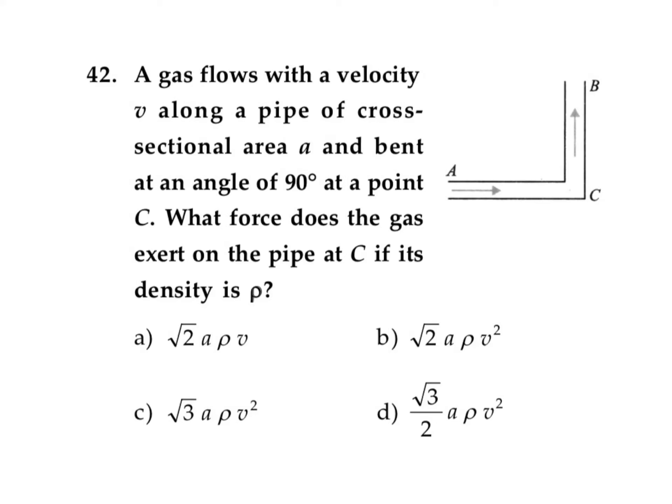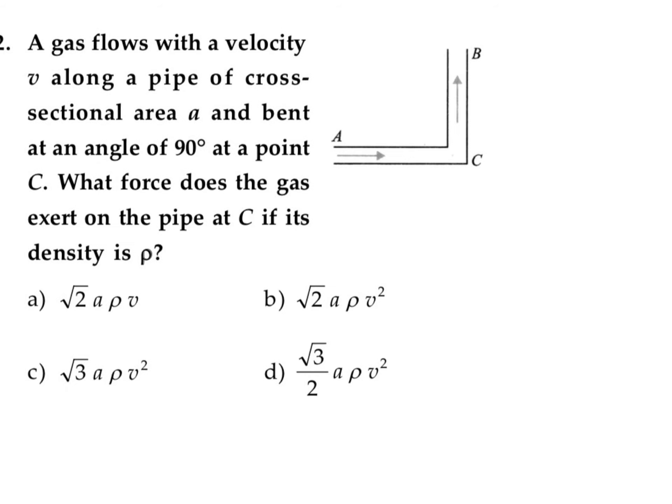In this question, it is given that gas flows with a velocity V along a pipe of cross-sectional area A and bends at an angle of 90 degrees at point C. What force does the gas exert on the pipe at C if its density is equal to rho?